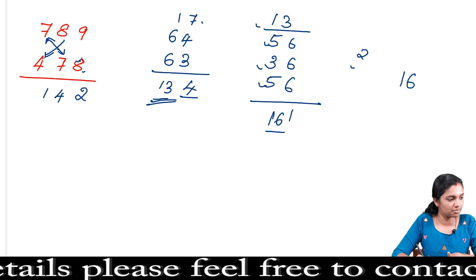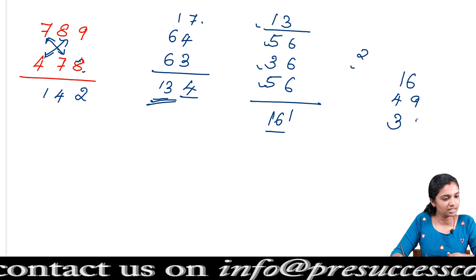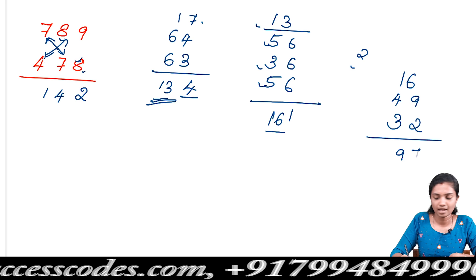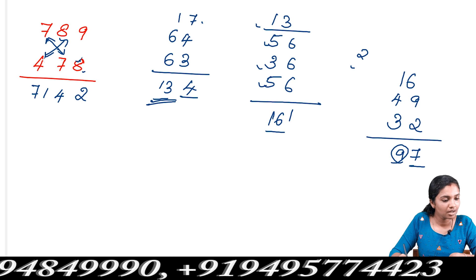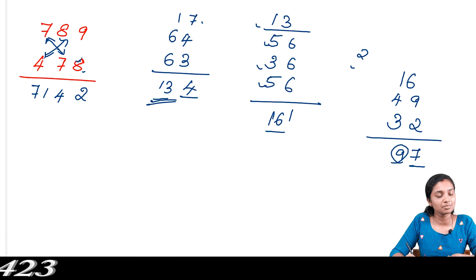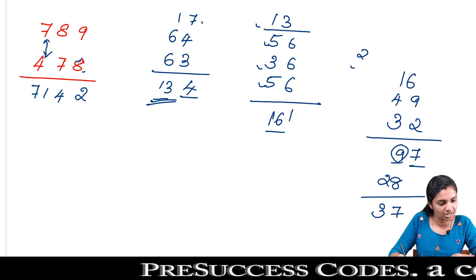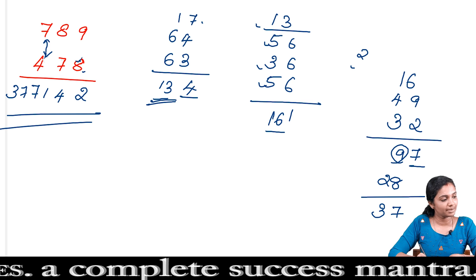Now we draw across: multiply these two numbers and add. 7 sevens are 49, 8 fours are 32. Add these together to get 97, plus the leftover carry 98. For the fifth step, we multiply the hundreds place digits: 7 times 4 is 28, plus carry 9 gives 37. The final answer is 377,142.